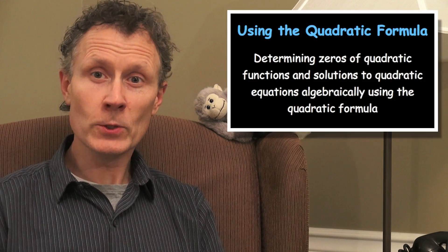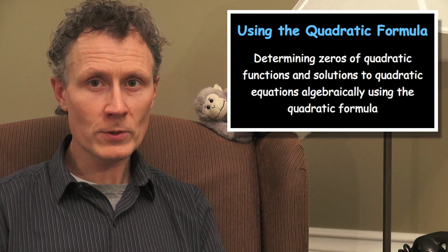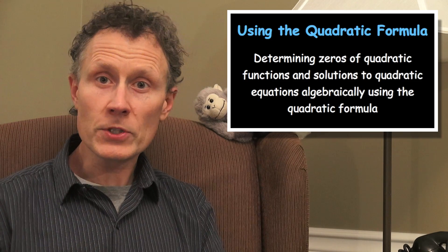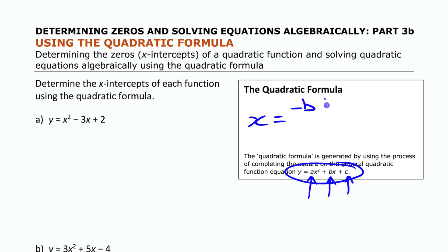In this video we're going to look at using the quadratic formula to find zeros of quadratic functions and solutions to quadratic equations. The quadratic formula is a way of finding the x-intercepts directly from the values of a, b, and c. The formula looks a little bit complicated if you haven't seen it before.